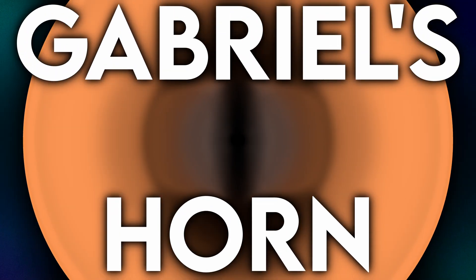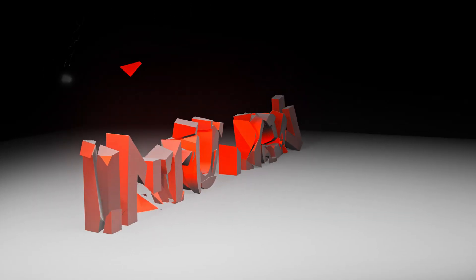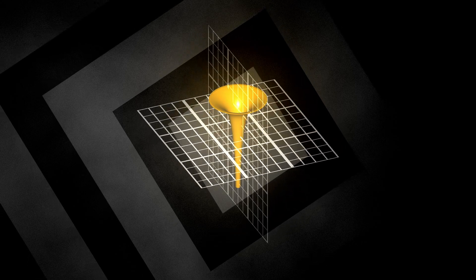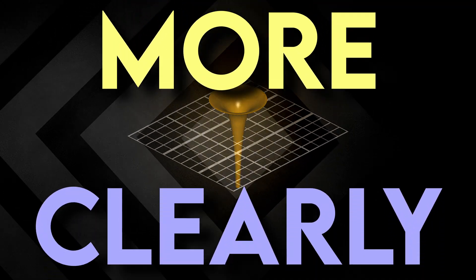This object is known as Gabriel's horn, a paradox that challenges our intuition and blurs the line between the infinite and the finite. But before diving into the mathematics behind this fascinating shape, let's first define it more clearly.